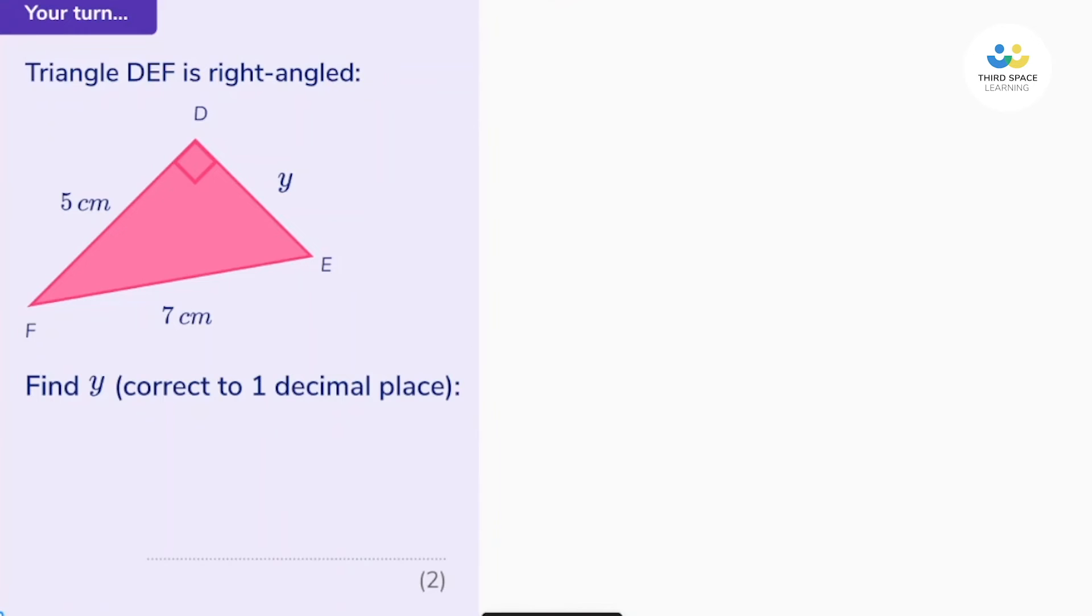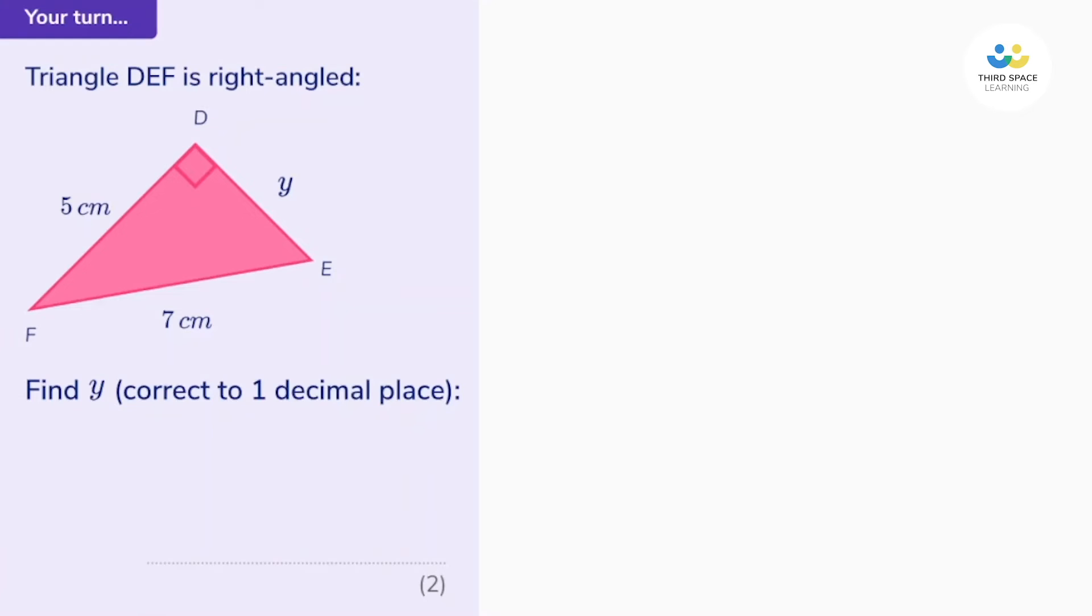Here's a second exam question. Pause the video and have a go. See if you can work out what y is. Okay, let's have a go. So triangle DEF is right angled, and we can see the right angle here. We know two of the sides - five and seven - and we want to find y correct to one decimal place. Okay, so this means we can use Pythagoras. So a squared plus b squared equals c squared.